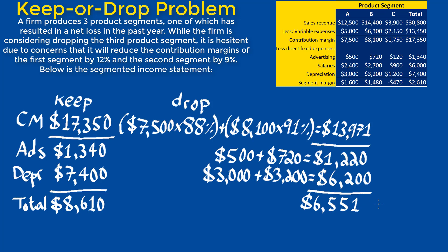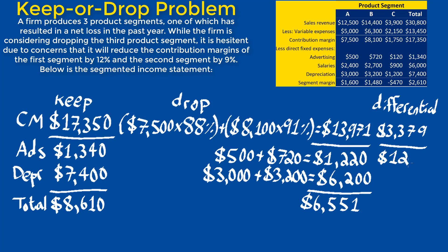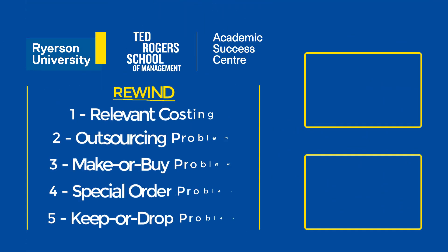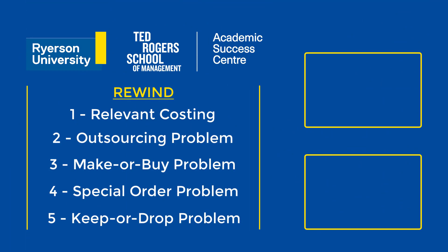By examining the difference between these two options, managers can conclude that dropping the third product segment is not a good idea, as it will result in a reduction in profits by $2,059. If you are confused about any of the examples covered in this video, I recommend you go back and pause at various points in each example to carefully examine where the numbers used in the calculations came from.